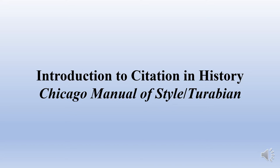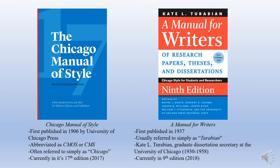Hello everyone and welcome to this lecture introducing you to citation in history. Today we will go over the Chicago Manual of Style, also known as Turabian format. For many of you, you've never heard of the Chicago Manual of Style or Turabian because in high school they mainly focus on Modern Language Association or MLA, or the American Psychological Association APA formats. But Chicago Manual Style Turabian is a format that's been around since the turn of the 1900s. The Chicago Manual of Style was first published in 1906 by the University of Chicago Press.